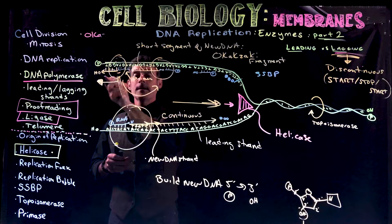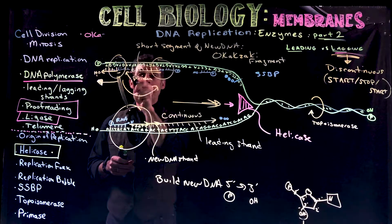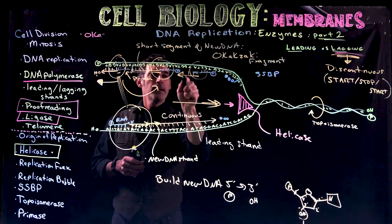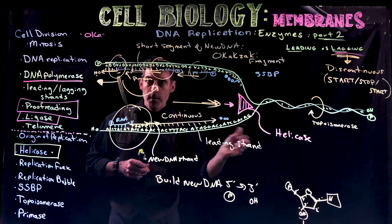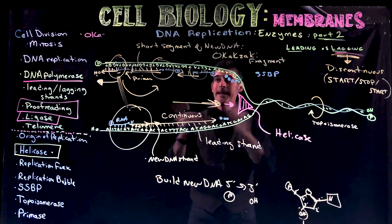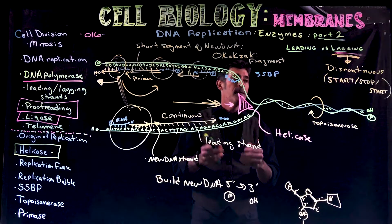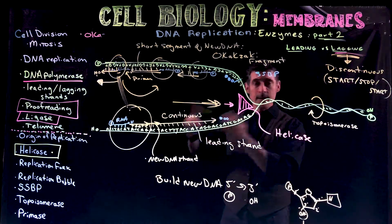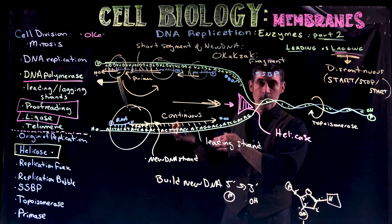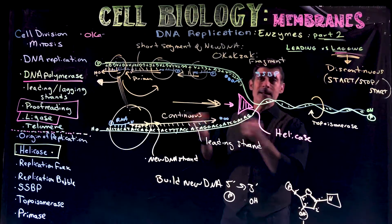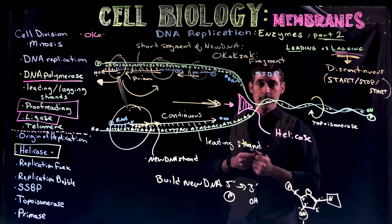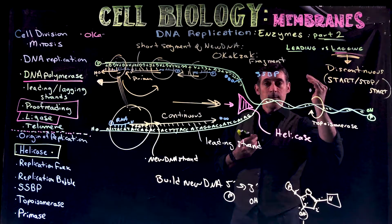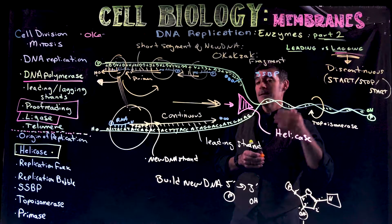The Okazaki fragment was built five prime to three prime, but it was part of what we call start-stop replication. For the lagging strand, instead of continuous replication, we have what's called discontinuous — or start, stop, start replication. It's going to start, stop, start again, stop, start again — just keep making little pieces of DNA, little Okazaki fragments. This is the difference between leading and lagging strands.